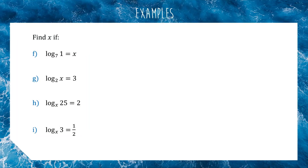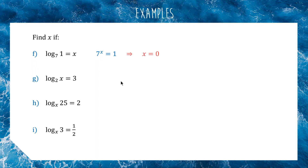For the next one, we've got log base 7 of 1 equals x. We rewrite it as 7 to the power of x equals 1. Now, 7 to the power of what gets you 1? If you're familiar with your indices, anything to the power of 0 always gives an answer of 1. So the answer for x is just 0 — 7 to the 0 equals 1.